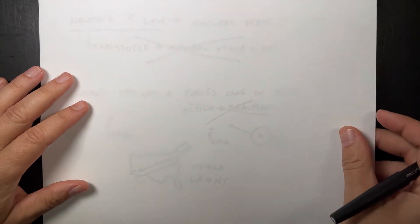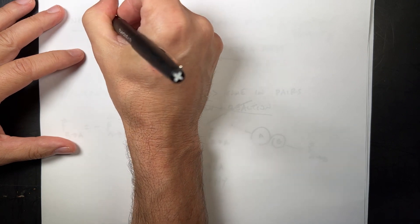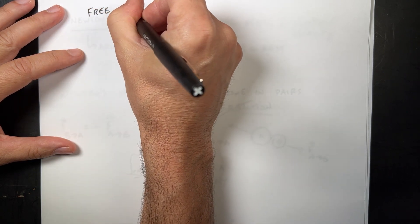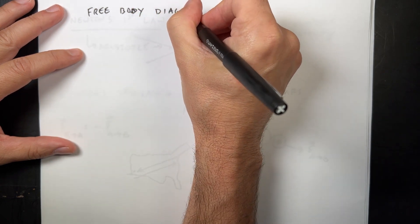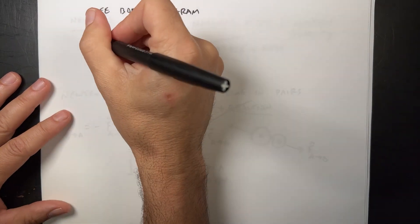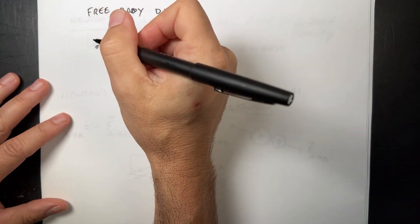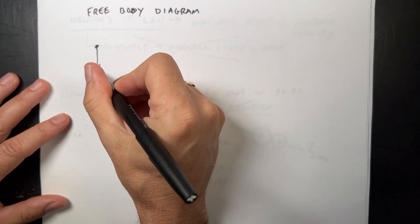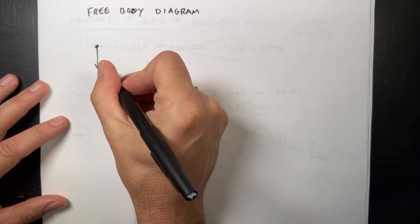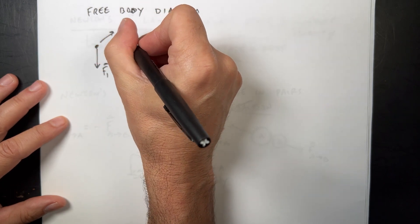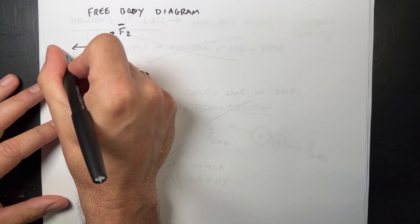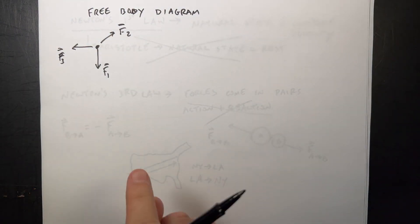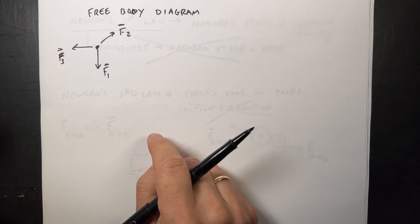Free body diagrams. When we want to look at the total forces acting on an object, we're going to draw that object as a point, and then we're going to draw all the forces acting on it as vectors: F1, F2, F3. One of the things you'll notice is I'm just calling them force one, two, and three, but they're due to some other objects.